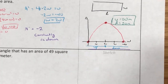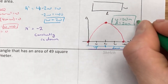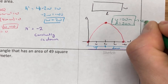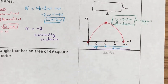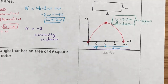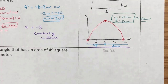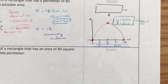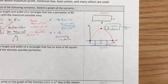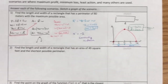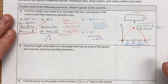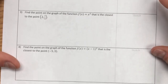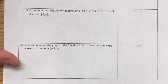The maximum occurs at width = 20 and length = 20. The maximum possible area is 20 × 20 = 400 square meters. Optimization really isn't too bad — it's just using what we already know about first and second derivatives to find critical values.